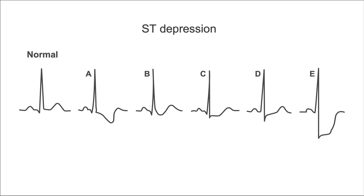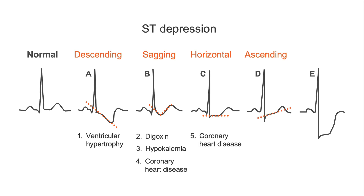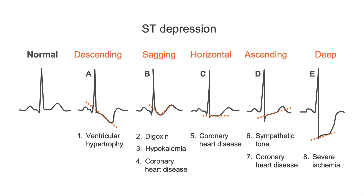Let's review when you might see these morphologies. Descending ST-depression is most often seen in ventricular hypertrophy and is a form of repolarization problem. ST-depression with a sagging morphology is most often seen in digoxin ingestion, hypokalemia, or coronary artery disease. Horizontal ST-depression is very characteristic of angina and coronary heart disease. Ascending ST-depression is most often seen in high sympathetic tone or during exercise and is very unspecific for coronary artery disease. Finally, a very deep ST-depression is commonly seen in severe ischemia.